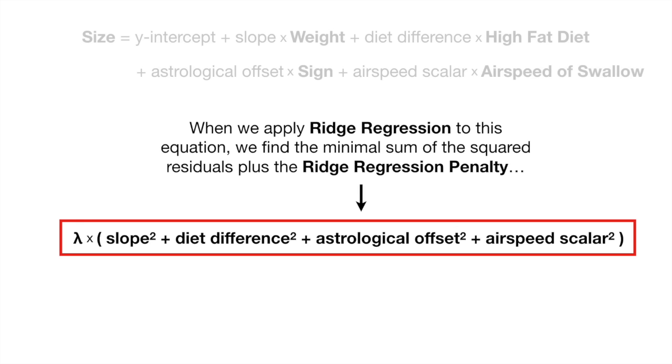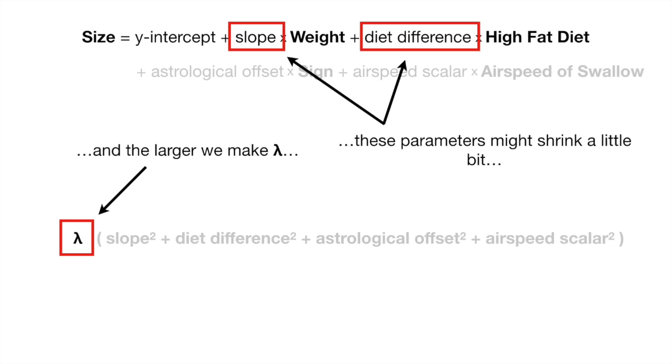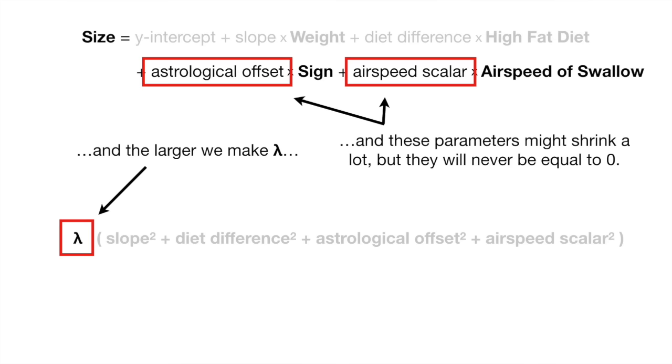When we apply Ridge Regression to this equation, we find the minimal sum of the squared residuals plus the Ridge Regression penalty. And the larger we make lambda, these parameters might shrink a little bit, and these parameters might shrink a lot, but they will never be equal to zero.